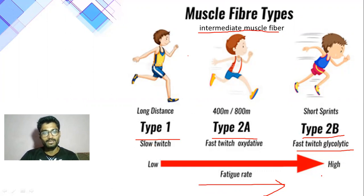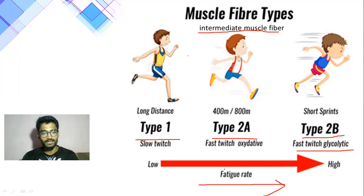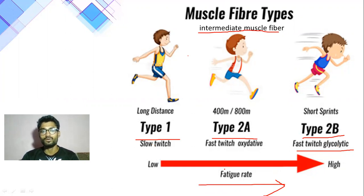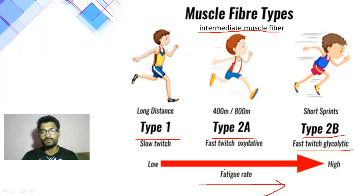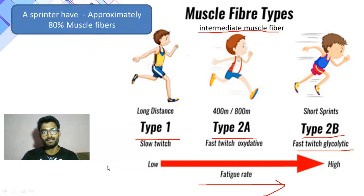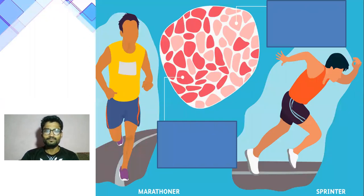Type 1 is very low in terms of lactic acid formation. The most amount of lactic acid formation will take place in Type 2B muscle fibers. Very less amount of lactic acid will be formed in Type 1 muscle fiber.